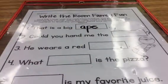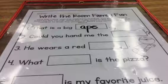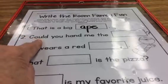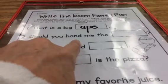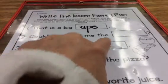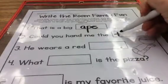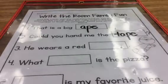Try to read this one to yourself. I think this person might be making a craft. Here's the sight word — could. Could you hand me the tape? We're making a project and we need some tape.